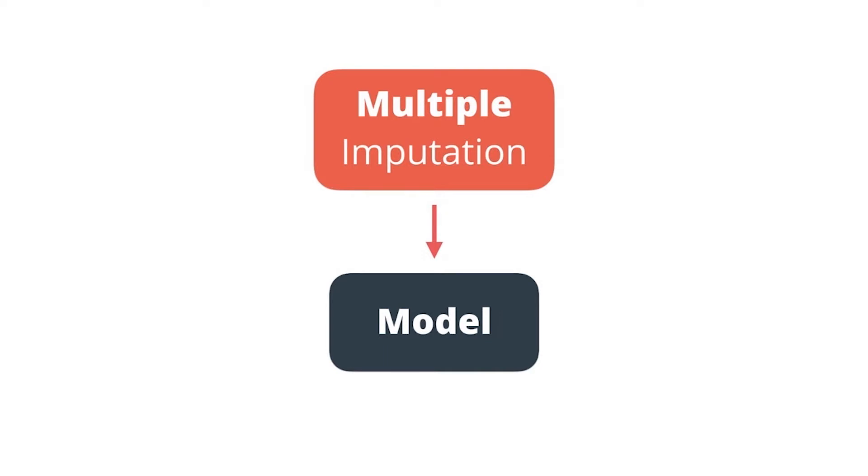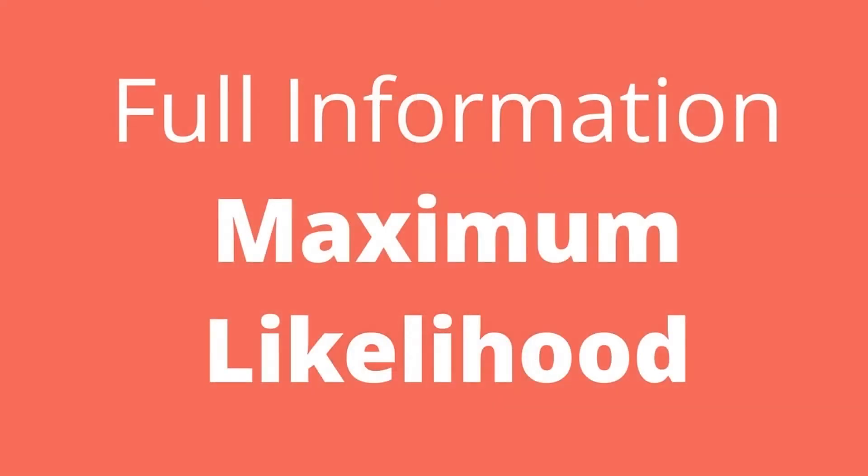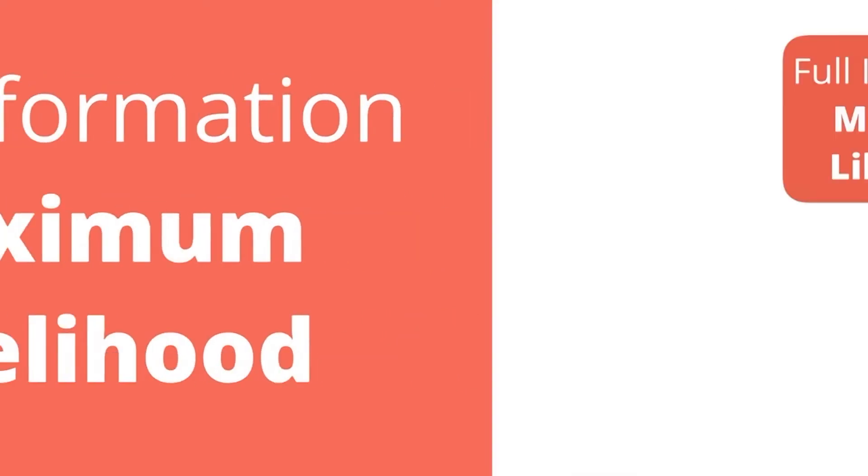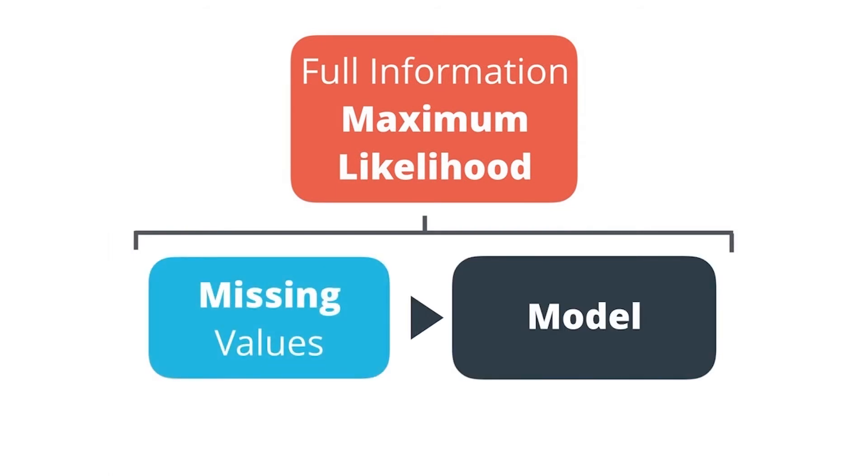Another advanced method is called full information maximum likelihood. Even the name is sort of intimidating, right? Here the missing values aren't actually replaced, but they're handled within the modeling process itself.